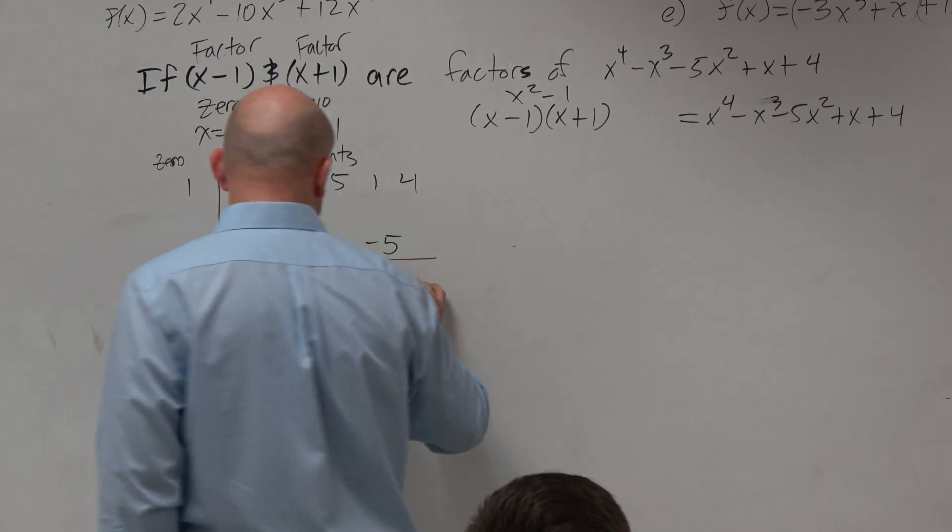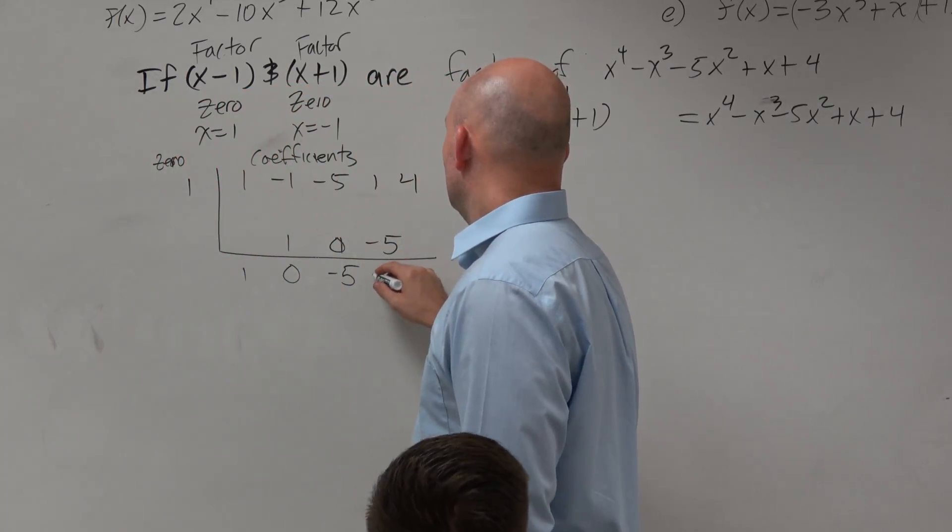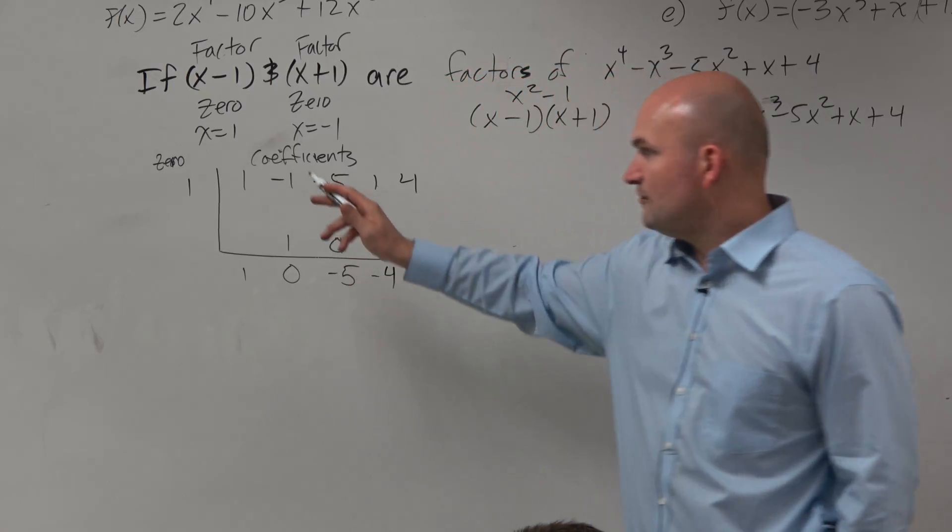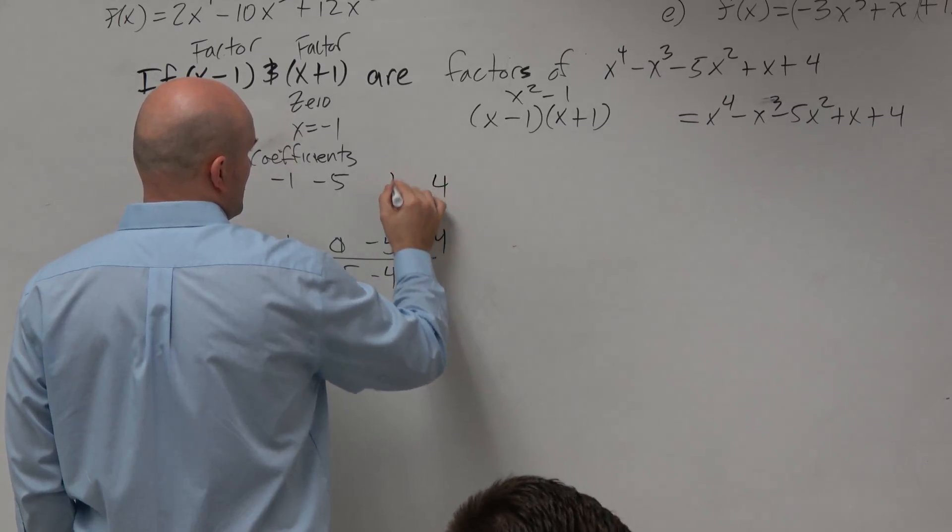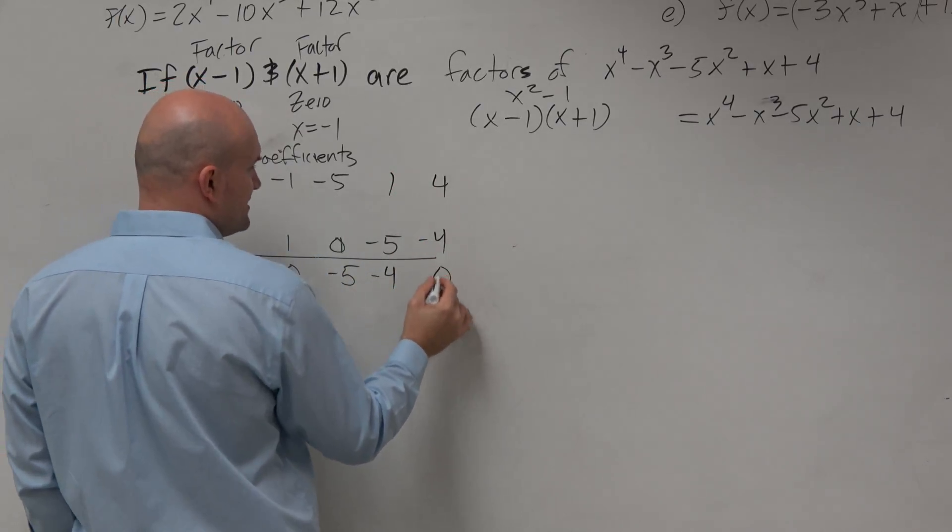1 plus negative 5 is going to be negative 4. Negative 4 times 1 is negative 4. Negative 4 plus negative 4 is 0.